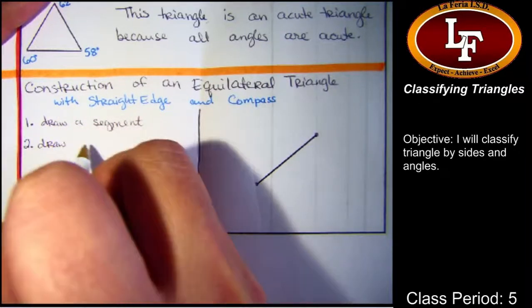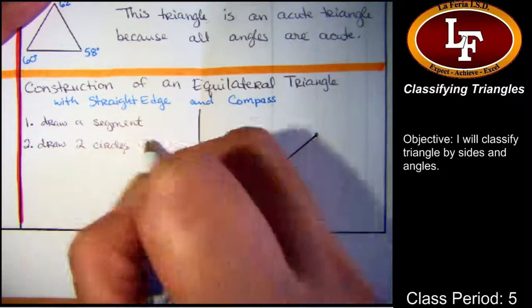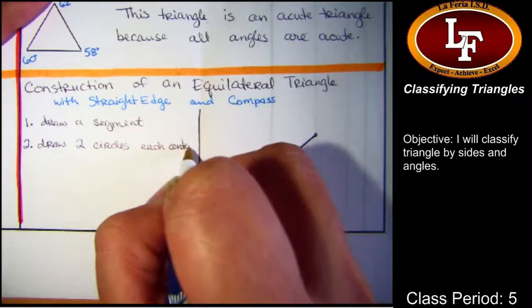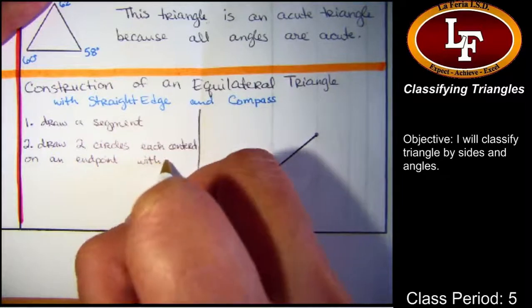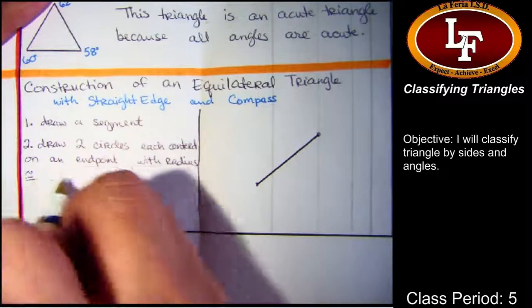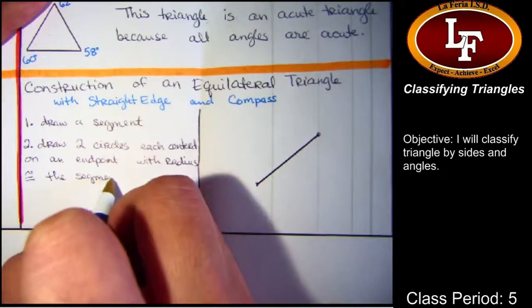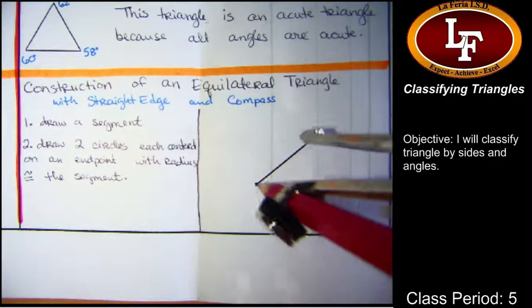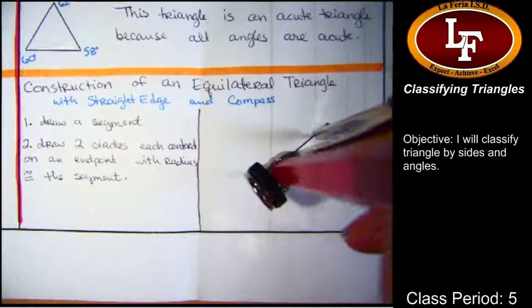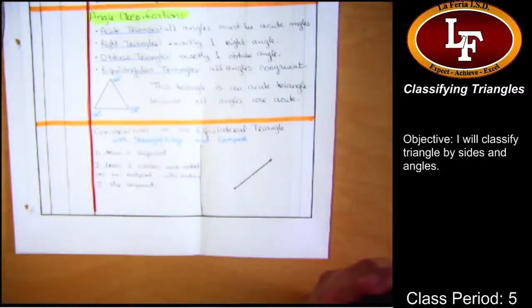Step two. This is the longest step that you have. Draw two circles, each centered on an end point with radius congruent to the segment. Draw two circles, each centered on an end point with radius congruent to the segment. I'm going to move my document cam up because if you can see, if I try to put my compass down, I'm going to run into the document camera. Like, it's just too low. So, I'm going to lift it up. I'll zoom it back down so that you can see the directions in a bit.